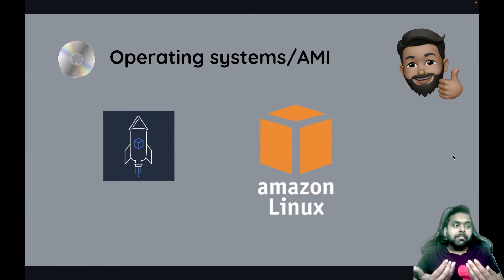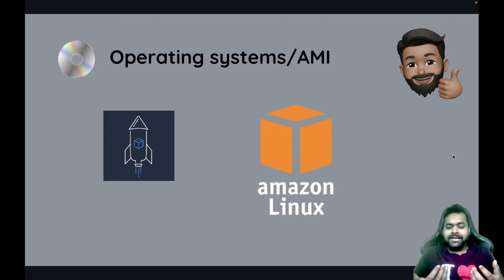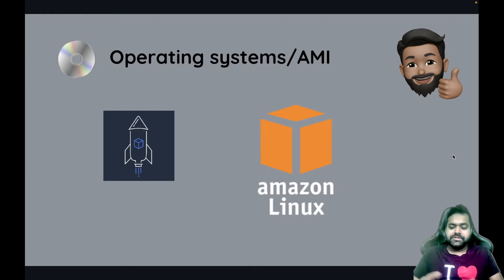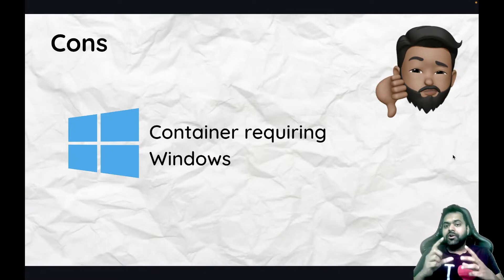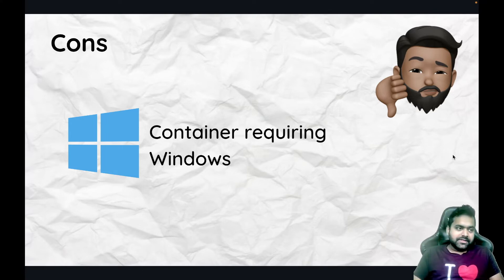There may be some AWS partners which offer alternatives, but in a basic setup you must use these AMIs. Because of this restriction, you cannot run containers that require Windows on a managed node group — for that, you would need to define a different node group.